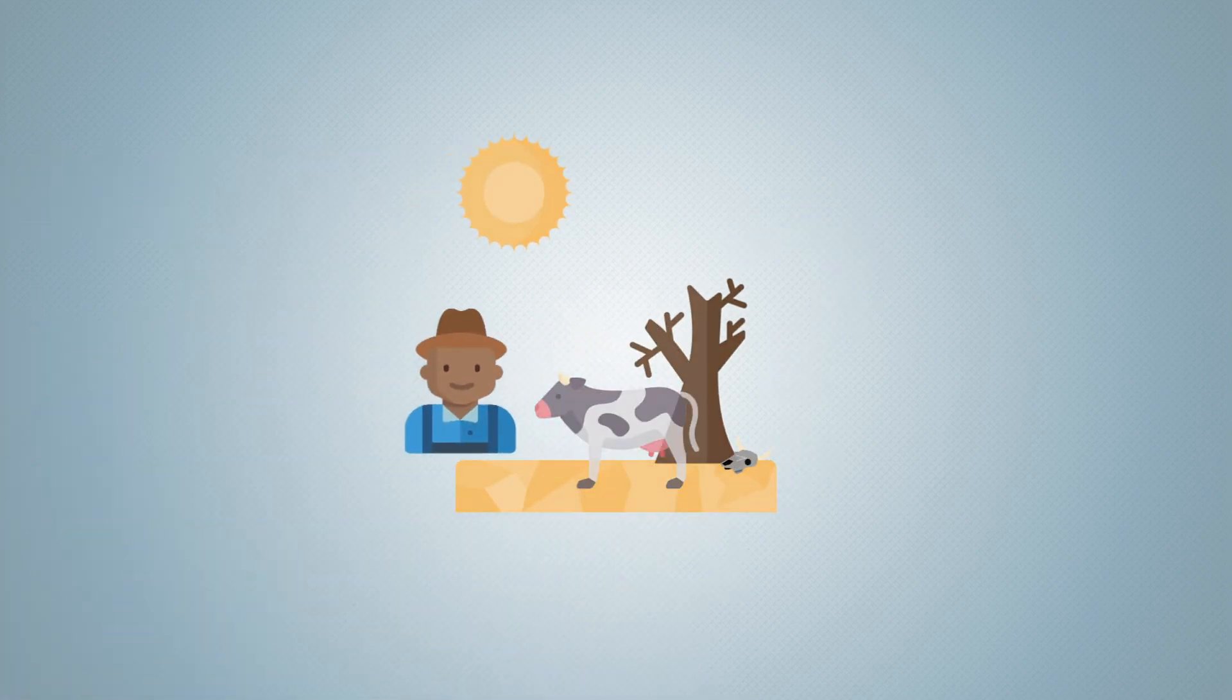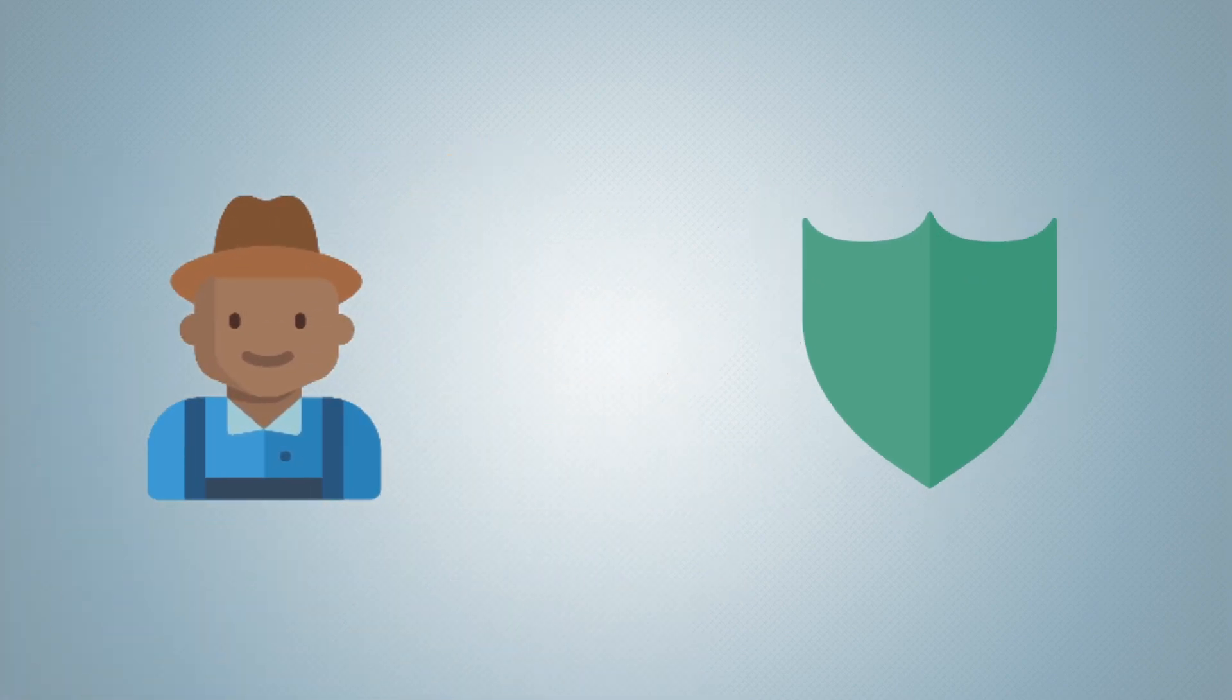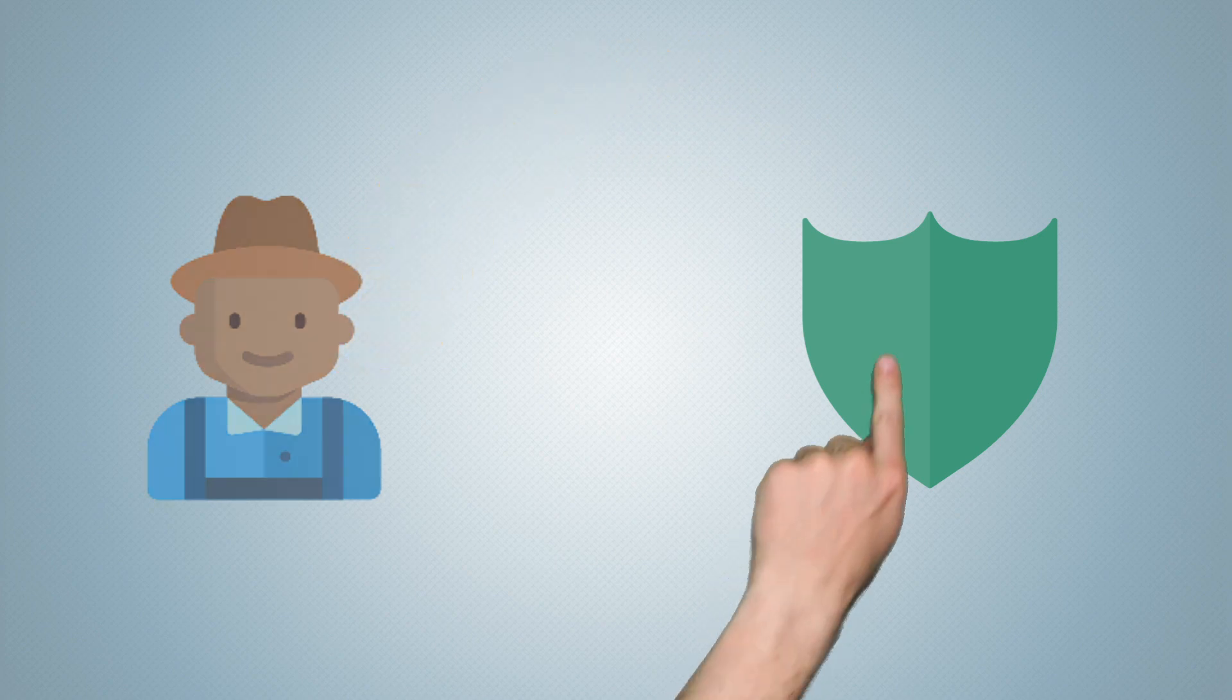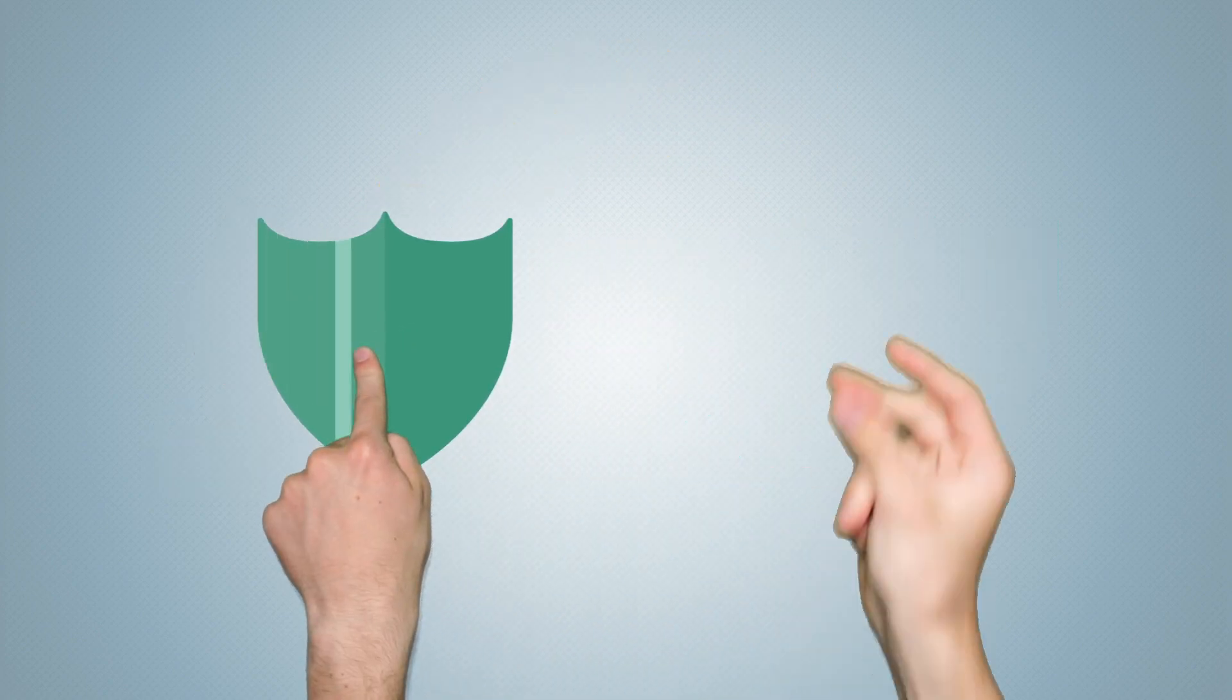Back to our example of the livestock farmers. For a small fee, they can insure themselves against climate risks. In the event of a drought, they receive money quickly and unbureaucratically. A special feature is that payouts take place before any damage occurs. Payments are not based on particular verified damage but rely on an index.